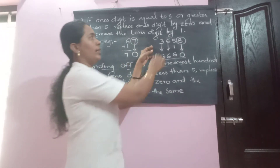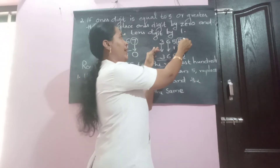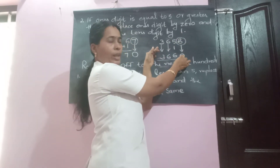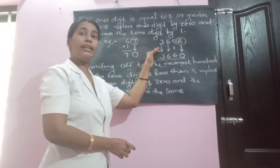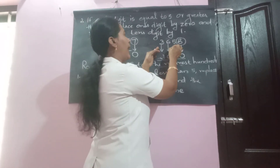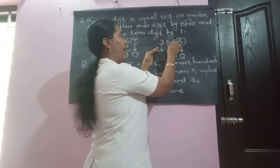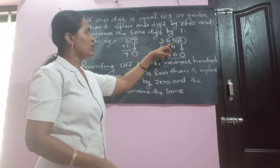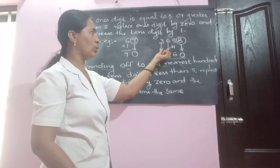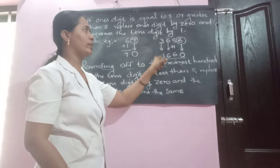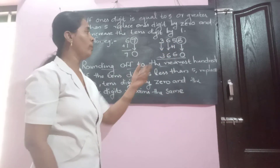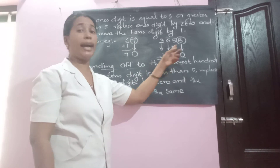Another number: 3658. Same as previous — circle the one's digit, replace it by zero. Look at this number: it is eight. Eight is more than five, so add one to the ten's digit. Five plus one equals six. Remaining digits have no change — bring down six, bring down three. So 3658 is rounded up to 3660.